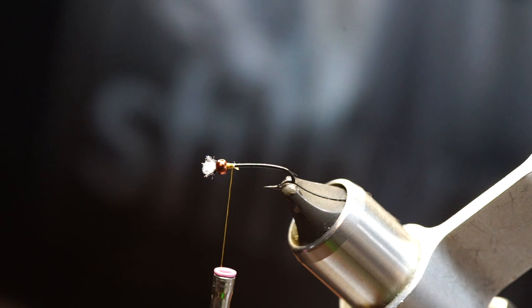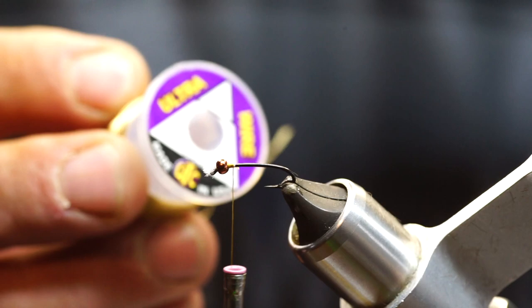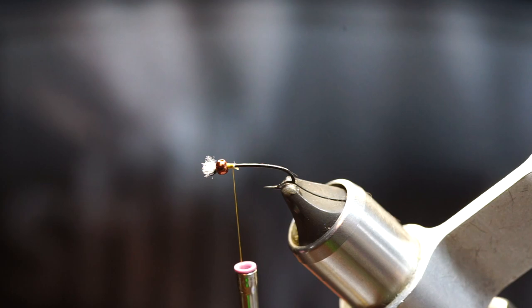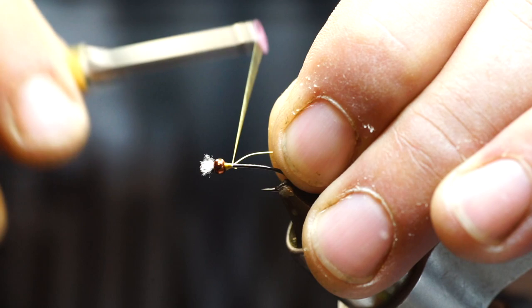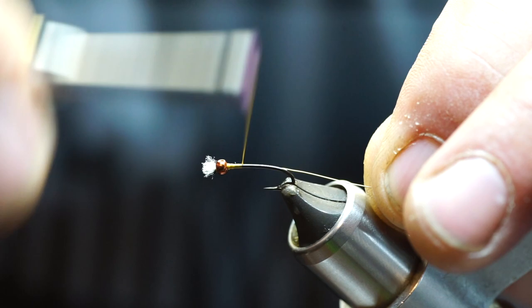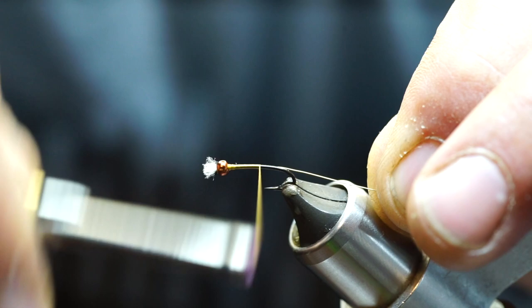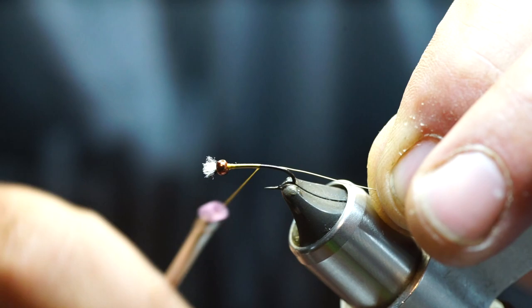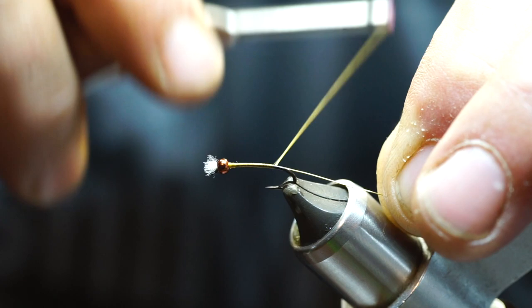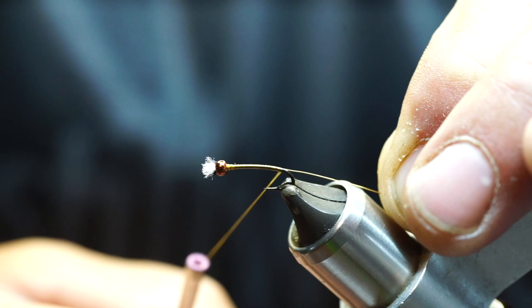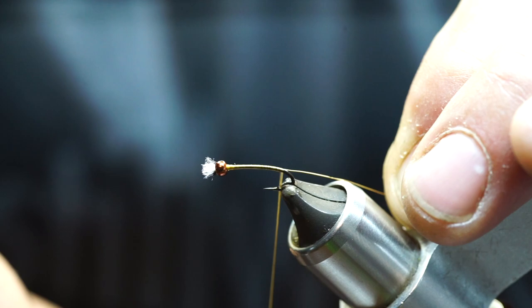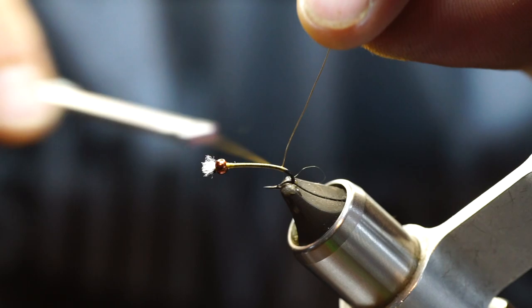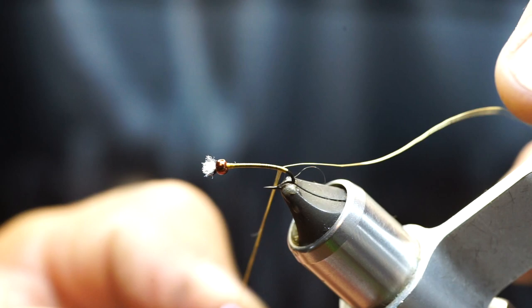The next material we'll be using is a small gold ultra wire for the ribbing. So, we'll tie in right behind the bead, catch it in once it's tight. And then just try to follow the hook shank, the profile of the hook shank, all the way down. While spinning your bobbin counterclockwise to flatten the thread. And keep that really nice skinny profile that you're looking for in these bugs.